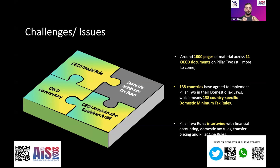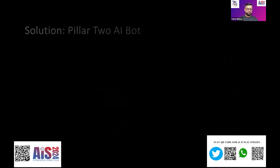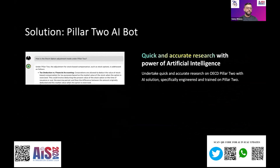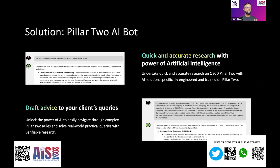To do research you need to ensure you're not missing any point, section, or article when writing advice or a paper. This tool, developed using Custom GPT, does two things: first, it allows very quick and accurate research using your own data; second, it not only finds the relevant text or article but also helps you draft advice for a client query. Those are the two important use cases from the bot I created using Custom GPT.